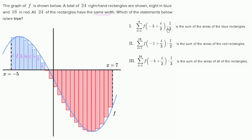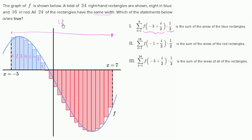We take f of something times one half. So it looks like f gives the height of each rectangle — remember, we're taking the value of the function on the right-hand side for the height — and the one half would be the width. Does it make sense that the width is one half? The total distance between x equals negative five and x equals seven is 12, and we're dividing it into 24 rectangles of equal width. So 12 divided by 24 gives each rectangle a width of one half. The one half checks out.